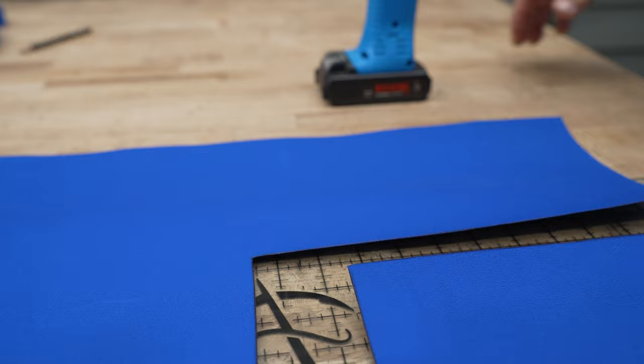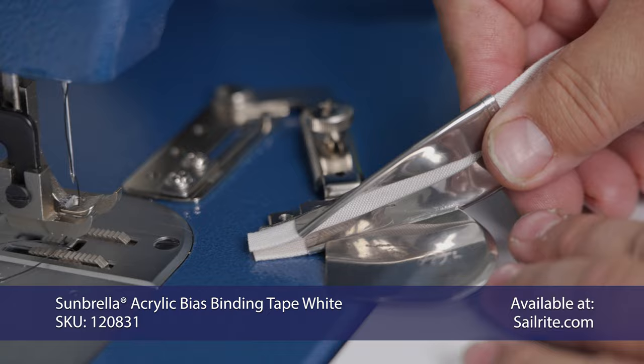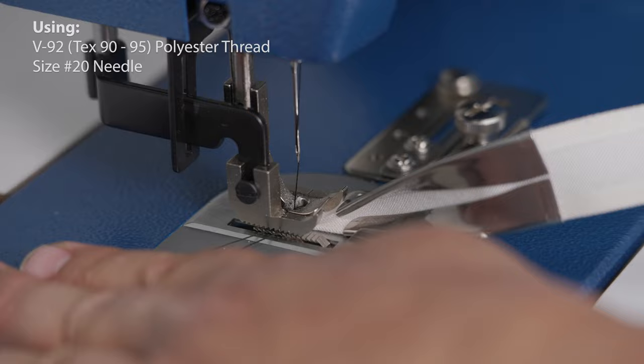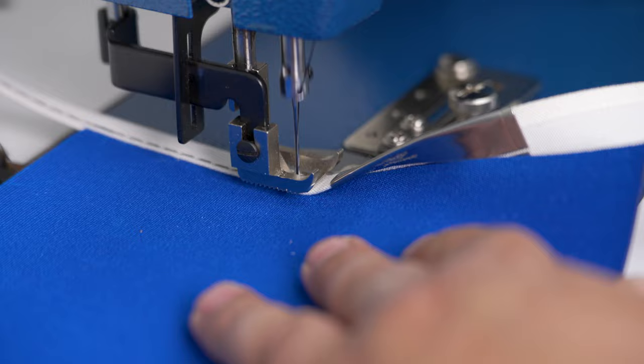We're using the Sailrite 1 inch Swing Away Binder, and we can do 90 degree turns with this without cutting the binding. This is a 1 inch Sunbrella Binding, and it's a bias binding. So I like to lower the foot, sew a little bit, and then put my piece of fabric in.